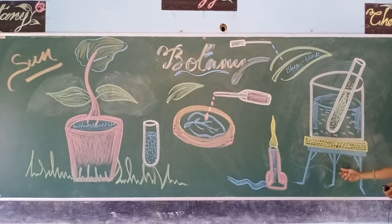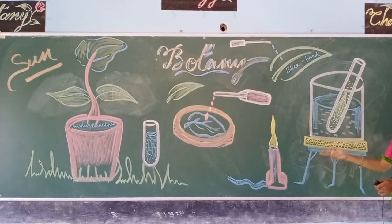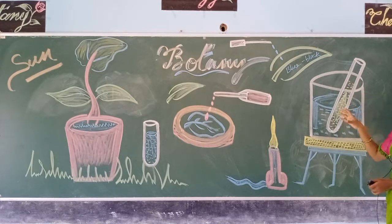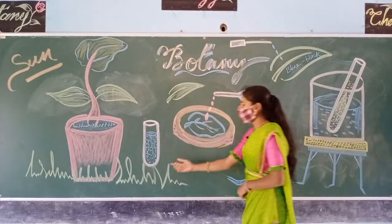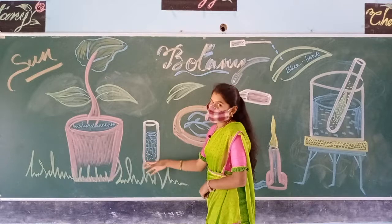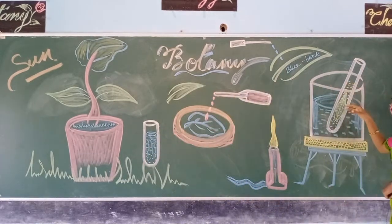Next, take a tripod stand and place a gauze on it. Upon this, place a boiling beaker filled with water. Then place the test tube — containing the mature leaf and spirit — inside this beaker.